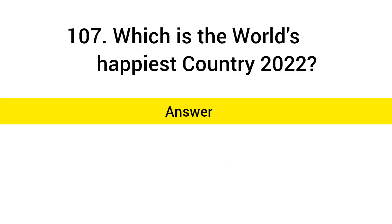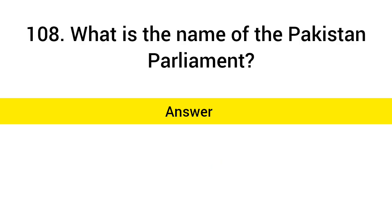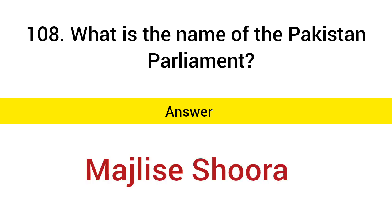Which is the world's happiest country 2022? Answer: Finland. What is the name of the Pakistan parliament? Answer: Majlis-e-Shura.